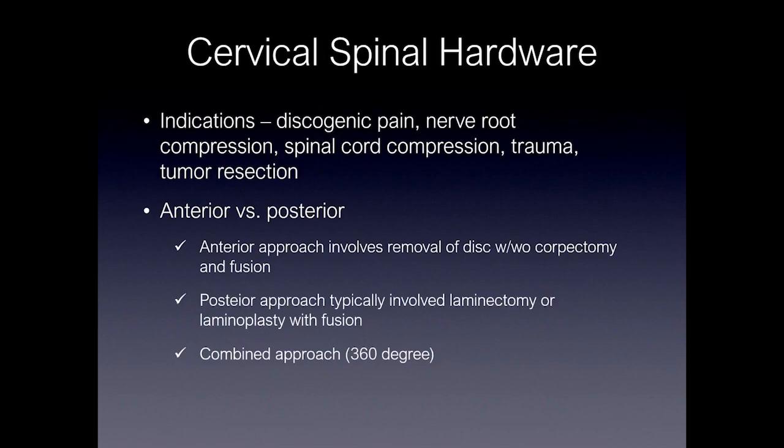The posterior approach typically involves a laminectomy or removal of the lamina, or a laminoplasty, and these tend to be associated with some level of fusion. A combined approach, which includes both the anterior and posterior, is typically termed a 360-degree approach.